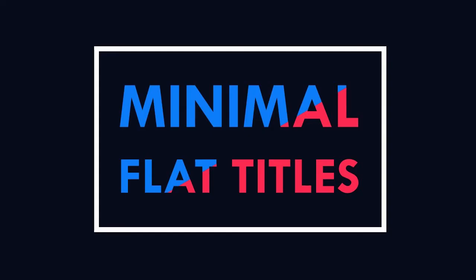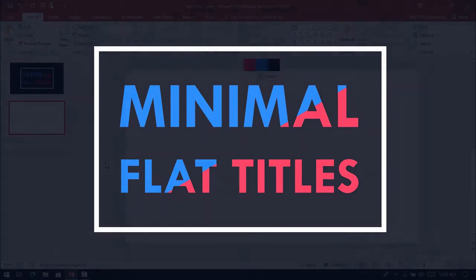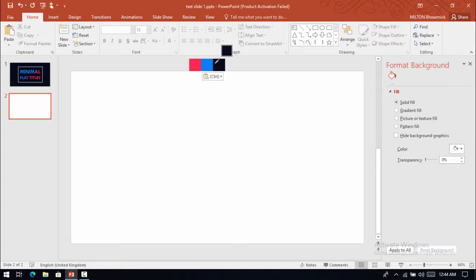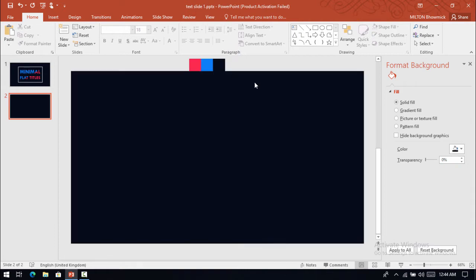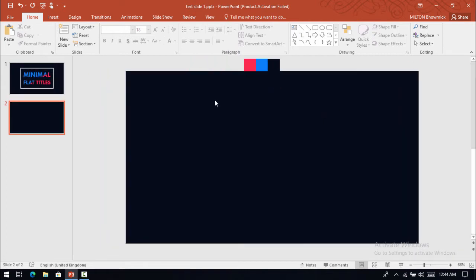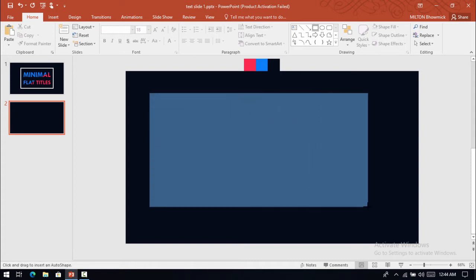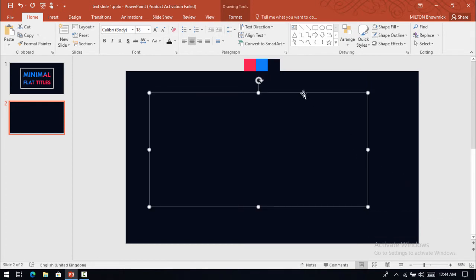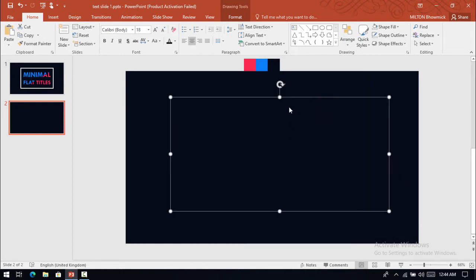Hello and welcome to PowerPoint Designer. In this tutorial I am going to show you how to make this minimal flat titles only on PowerPoint 2016. First of all, select a new slide then change its background — I will use these three colors. Then select a rectangular box, drag it over here, then no fill, then no outline.